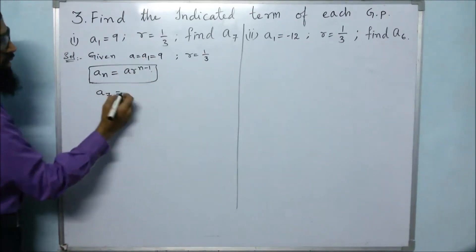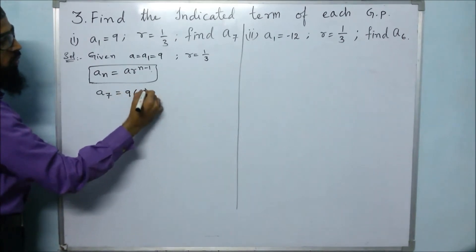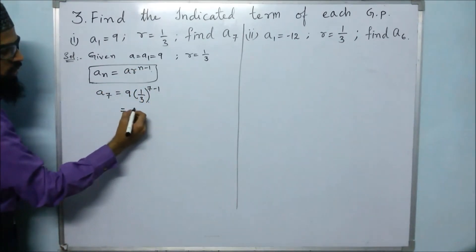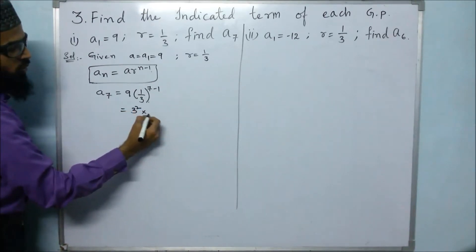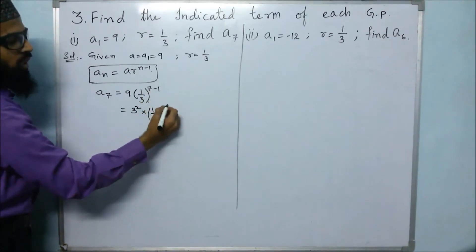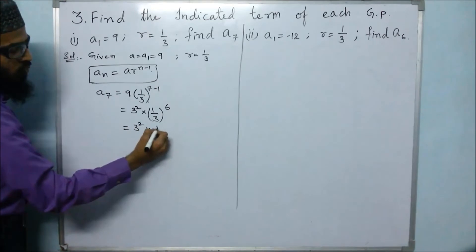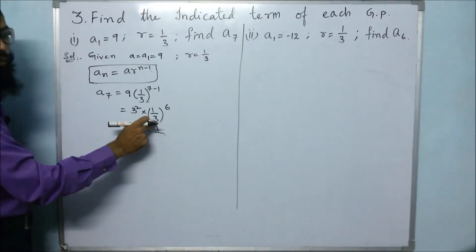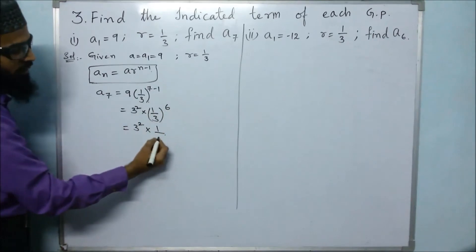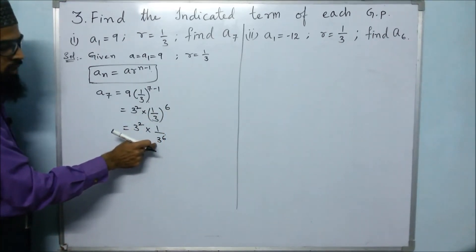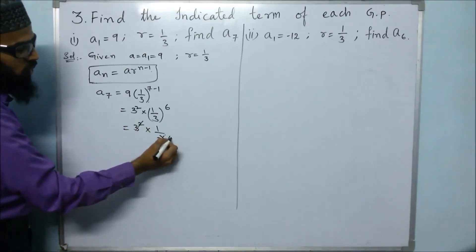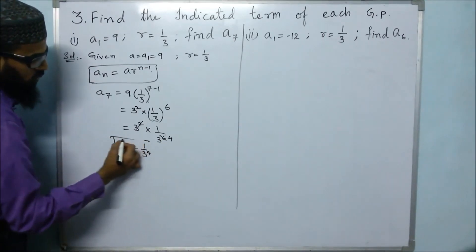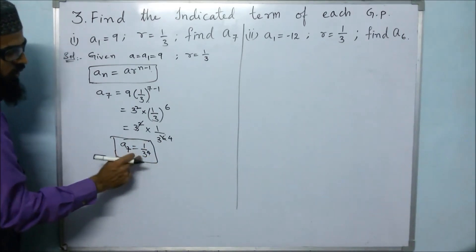To find the seventh term, a is 9 and r is 1 by 3, raised to the power of n minus 1, where n is 7, so 7 minus 1 is 6. We write 9 as 3 squared, multiplied by 1 by 3 to the power of 6, which gives 3 squared into 1 by 3 to the power of 6. Cancelling 2 threes from the 6, we get 1 by 3 to the power of 4. So a7 equals 1 by 3 to the power of 4.